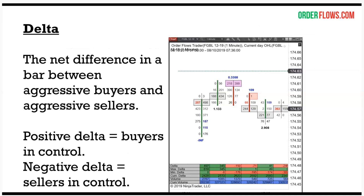Delta is the net difference between aggressive buyers and aggressive sellers in a bar. Positive delta means buyers are in control; negative delta means sellers are in control. When an aggressive buyer buys the offer, that registers as plus one delta. When an aggressive seller sells into the bid, that's minus one. Generally, when your bar has positive delta it's going to be a green candle; negative delta usually produces a red candle.